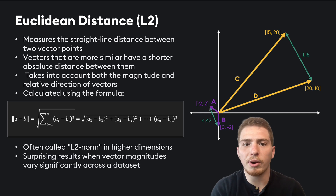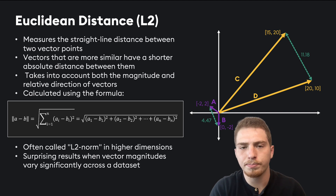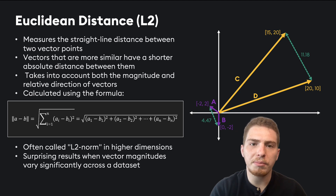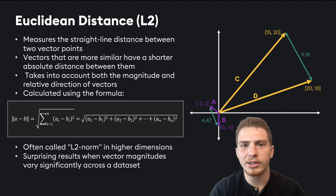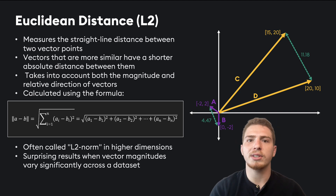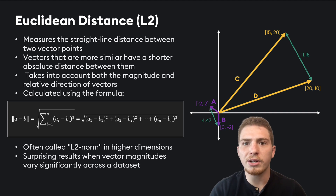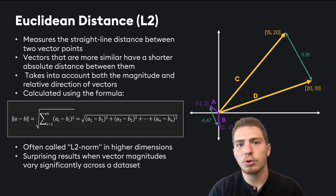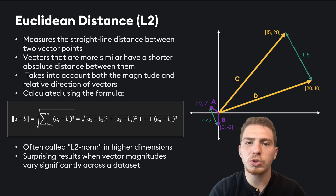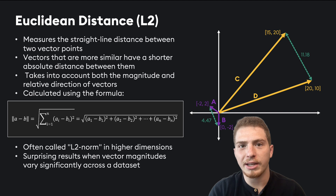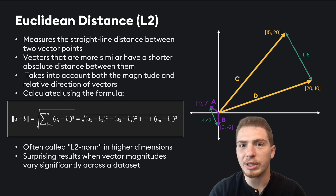One interesting thing about Euclidean distance is that at higher dimensions it often gives unpredictable results. For example, in a two-dimensional vector where the first dimension represents a student's exam score and the second represents how much they studied, students who got very similar scores can be considered very different just because they studied a different amount. So you generally have to think about how closeness is defined in your application and whether you want large outliers to affect your similarity score.